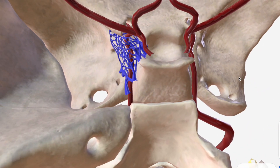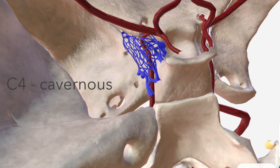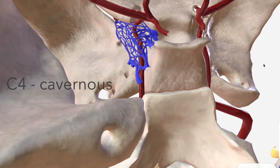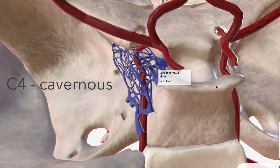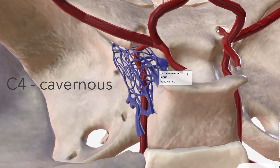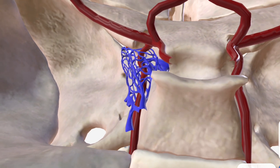C4 is known as the cavernous segment because it passes through the cavernous sinus, which is an intricate network of very fine veins that interface with the inside of the skull. Through the cavernous sinus, the cavernous segment of the internal carotid passes.